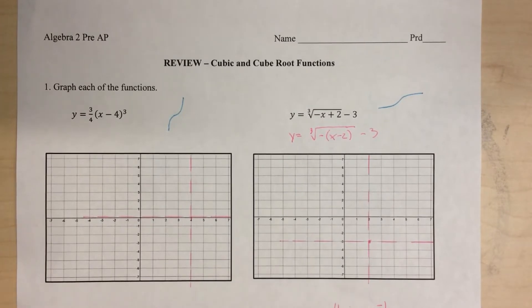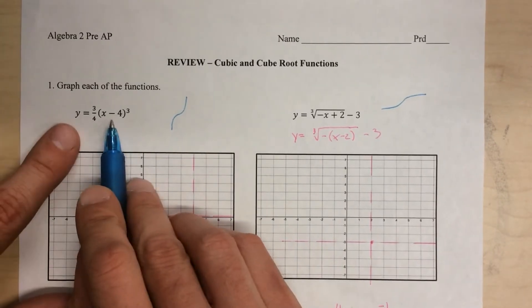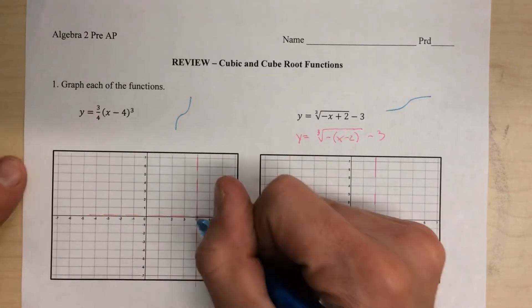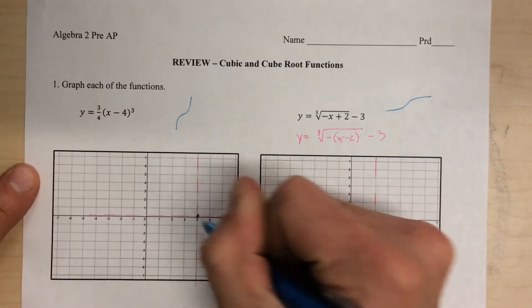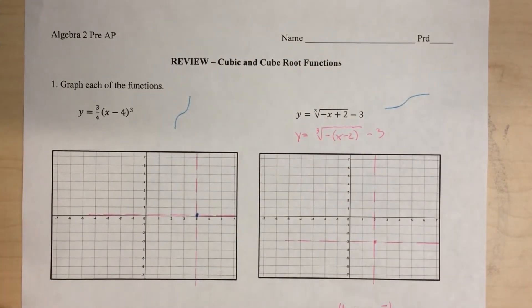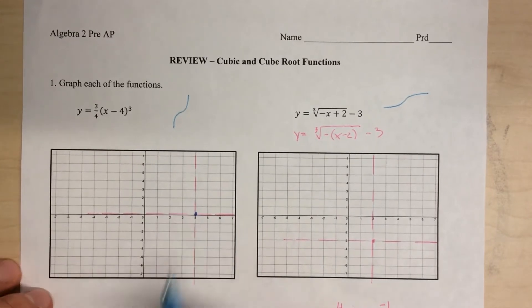Now for graphing, what I want you to do is identify the point of symmetry first. So you're looking for those h and k values that are in there. In the first, you're going to have a horizontal shift of four units to the right, but you don't have any verticals. So that's going to put the point of symmetry right here. Once you have that location, the a values and the b values can't do anything to that point. They're actually just going to expand and compress and flip all around that location.